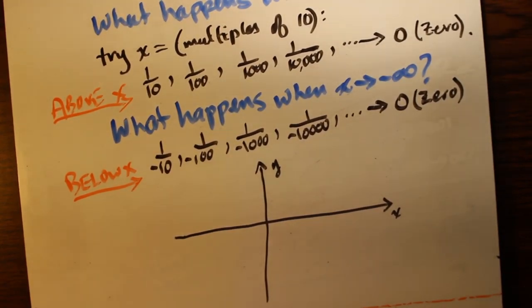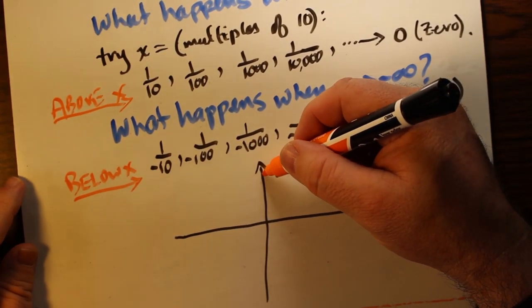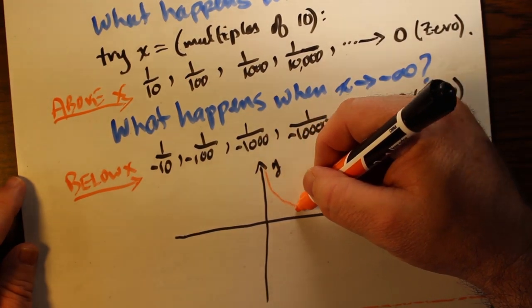So as we can see, for the function as a whole, both the x and y axes are asymptotes for this function.